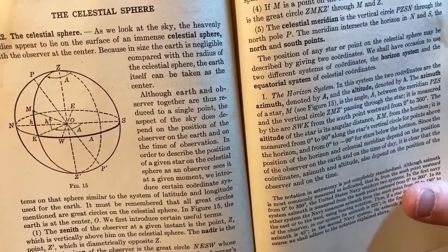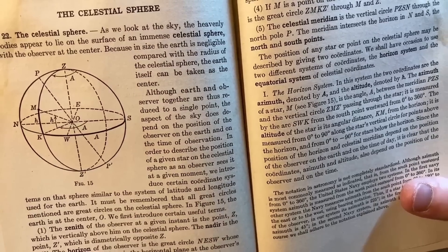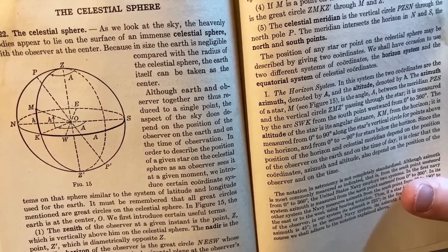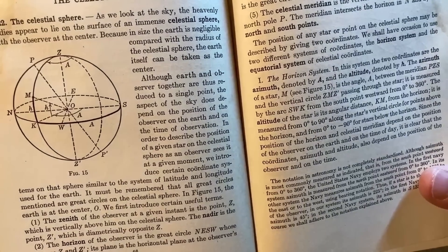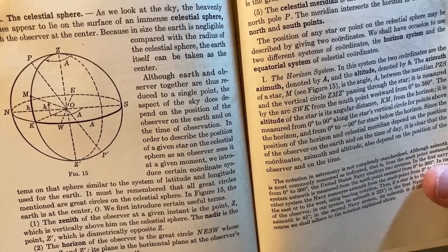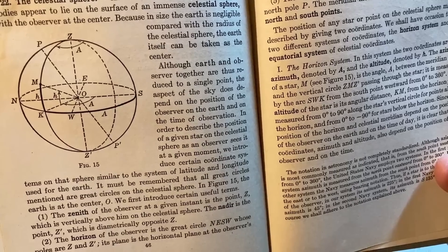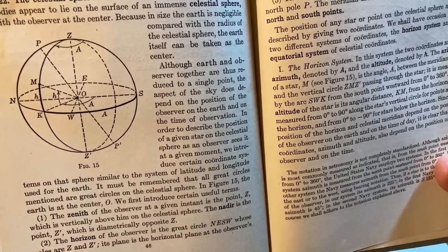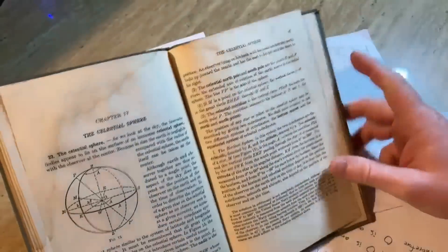Although the earth and observer together are thus reduced to a single point, the aspect of the sky does depend on the position of the observer on the earth and on the time of observation. In order to describe the position of a given star on the celestial sphere as an observer sees it at a given moment, we introduce certain coordinate systems on that sphere similar to the system of latitude and longitude used for the earth. Neat, right? So they introduce other things there. Wow.